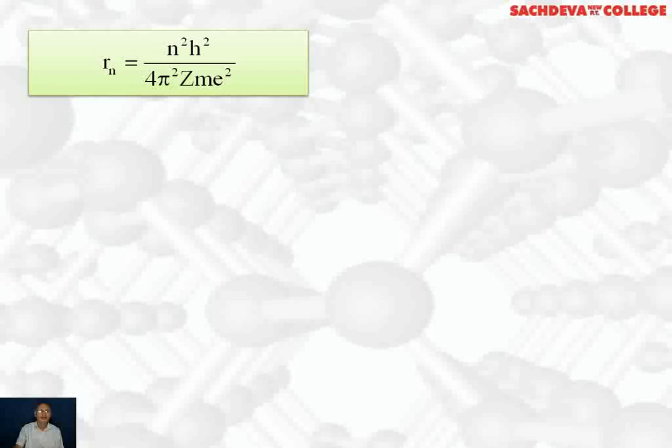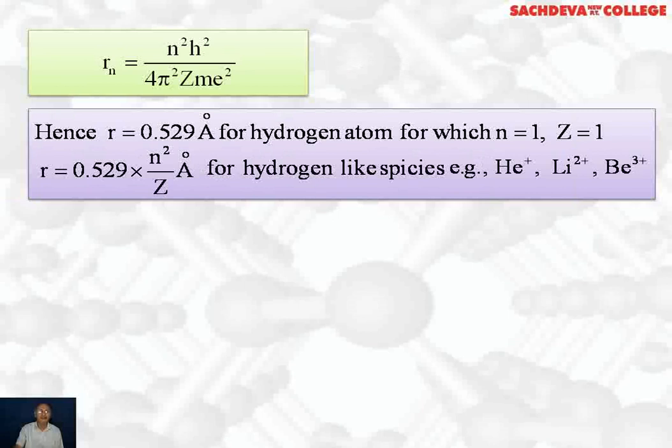Now with the help of Bohr model of atom, we can calculate the radius of every energy level. So radius of nth energy level will be rₙ = n²h²/(4π²Zme²). After substituting the value, r comes out to be 0.529 Angstroms for hydrogen atom for which n=1 and Z=1. The general formula will be r = 0.529 × n²/Z Angstroms for hydrogen-like species having 1 electron.